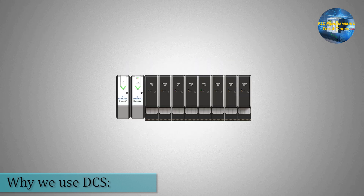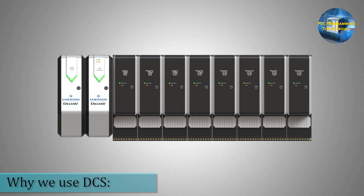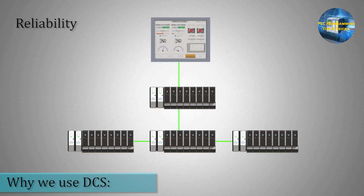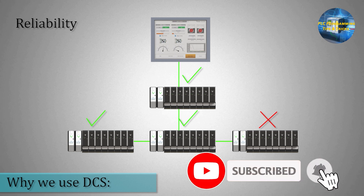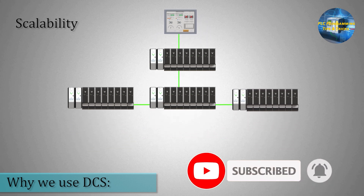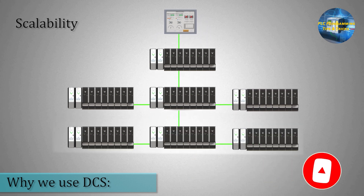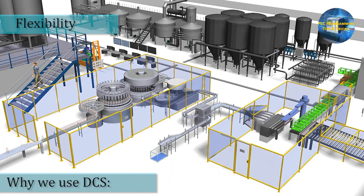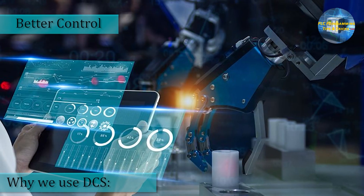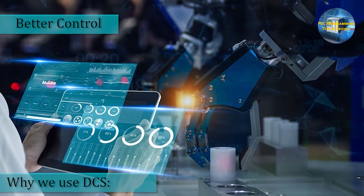So why use a DCS? Here are some key benefits. Reliability: if one part of the system fails, the rest can keep running. Scalability: easy to add more controllers and expand the system. Flexibility: can handle complex processes with ease. Better control: improved accuracy and precision in managing processes.